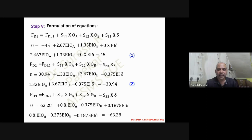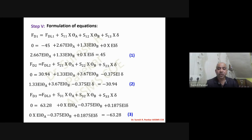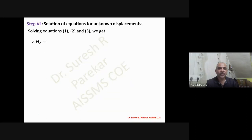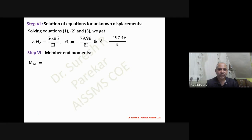Solving the three equations gives: θA = 56.85/EI, θB = minus 79.98/EI, and Δ = minus 497.46/EI. With these displacements known, we apply slope deflection equations to find final moments.